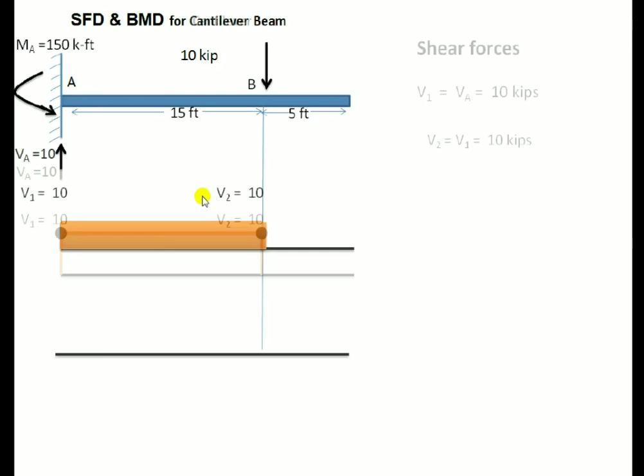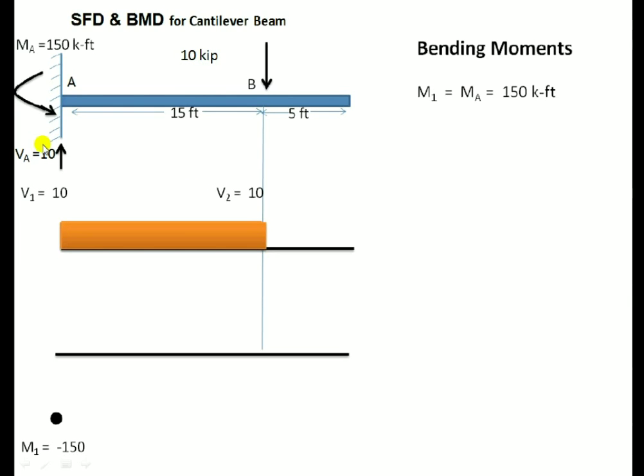This is the SFD. Now I will draw the BMD diagram. M1 is equal to 150 k-ft anti-clockwise. Counterclockwise is taken as negative and clockwise as positive. M2 can be found by taking the previous moment M1 plus or minus the SFD area. We will add the SFD area if it is above the baseline.